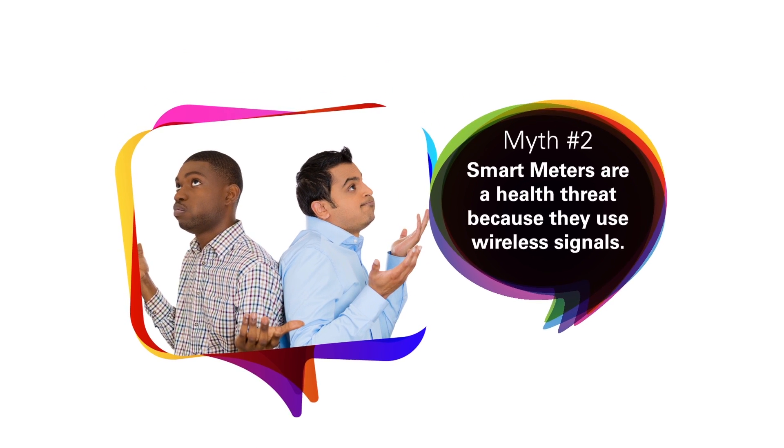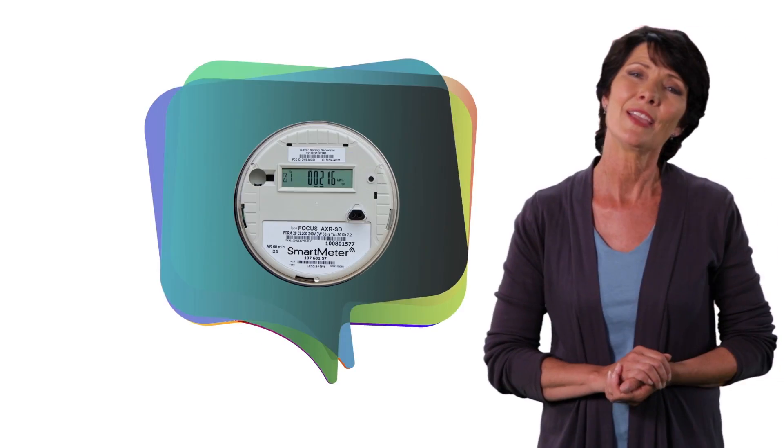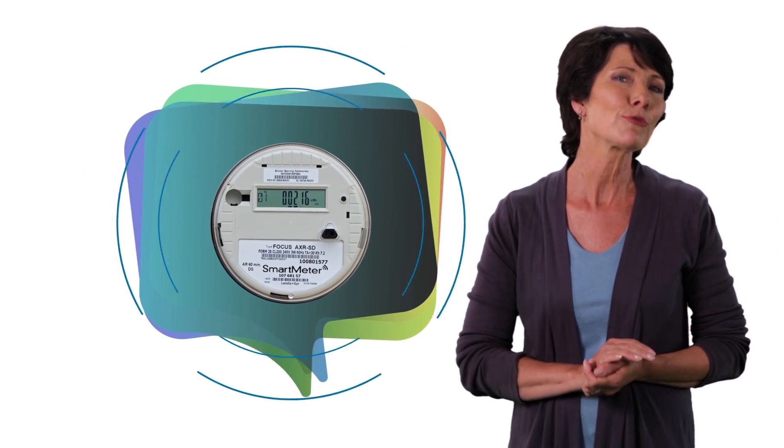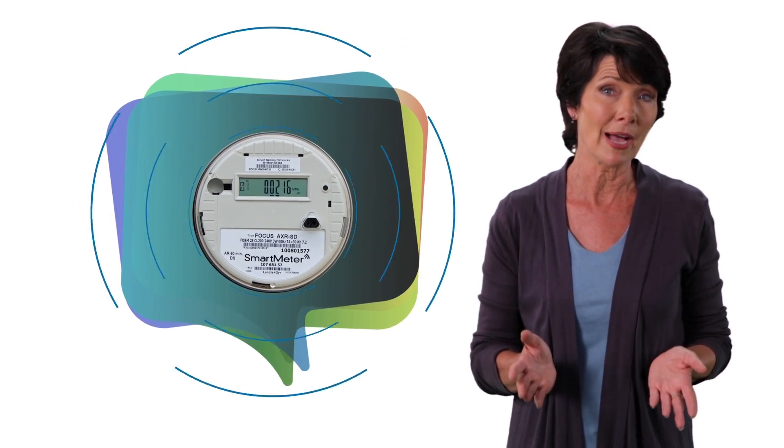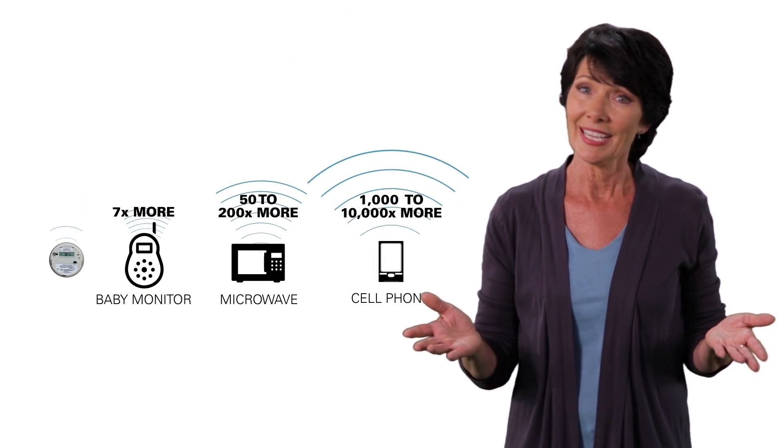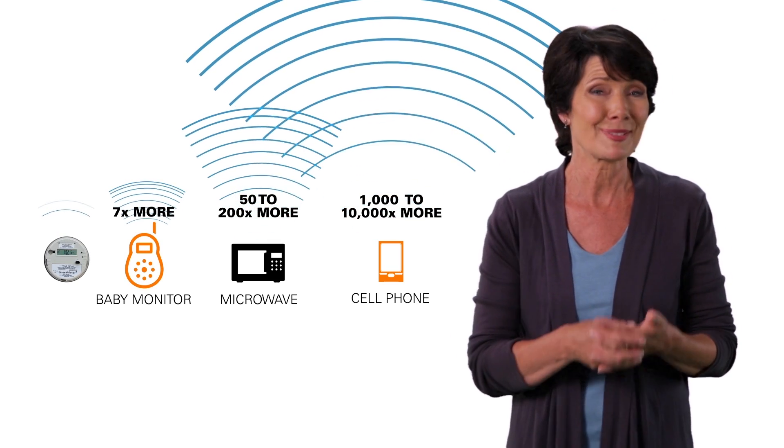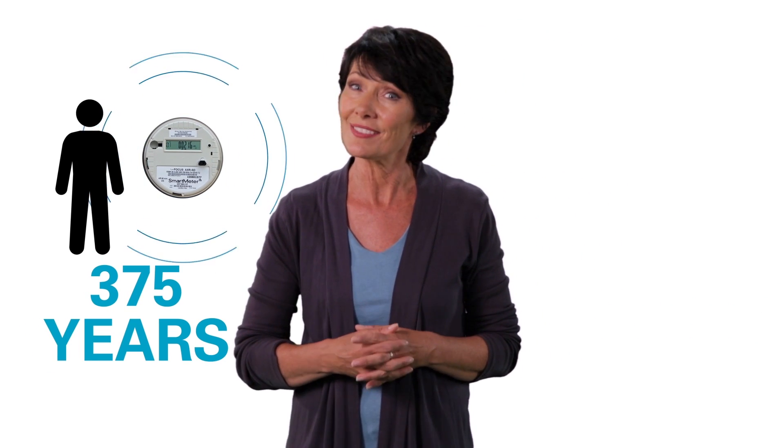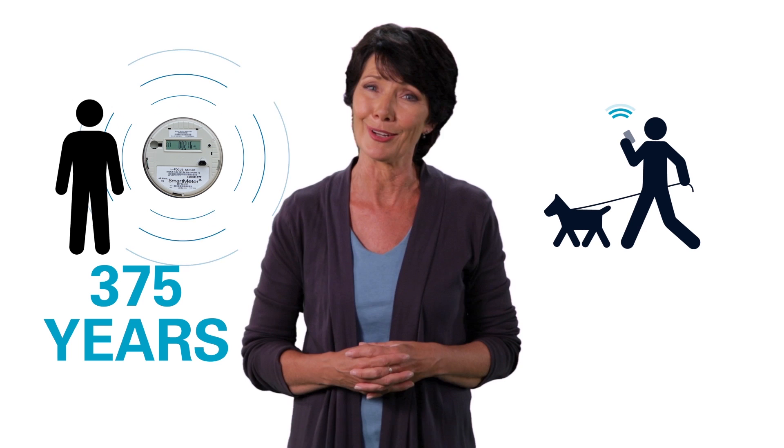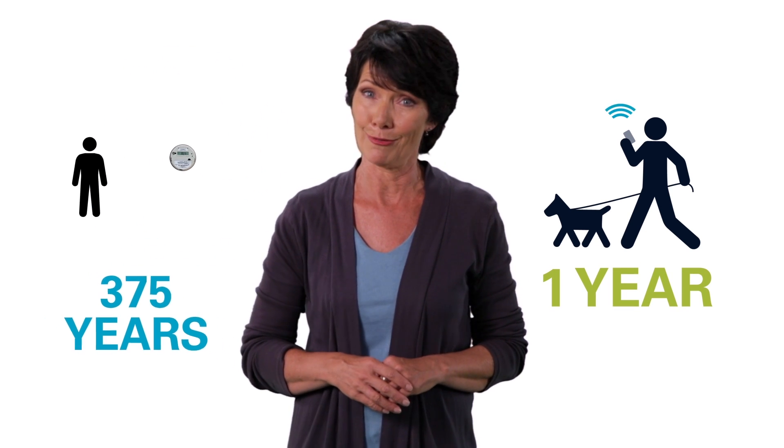Myth number two, smart meters are a health threat because they use wireless signals. Fact, the amount of radio frequency energy emitted by smart meters is well below FCC limits and it's lower than the levels produced by a cell phone, baby monitor, satellite TV or microwave oven. And in fact it would take you 375 years to get the same RF exposure from a smart meter that you would get in a year of daily 15 minute cell phone calls.